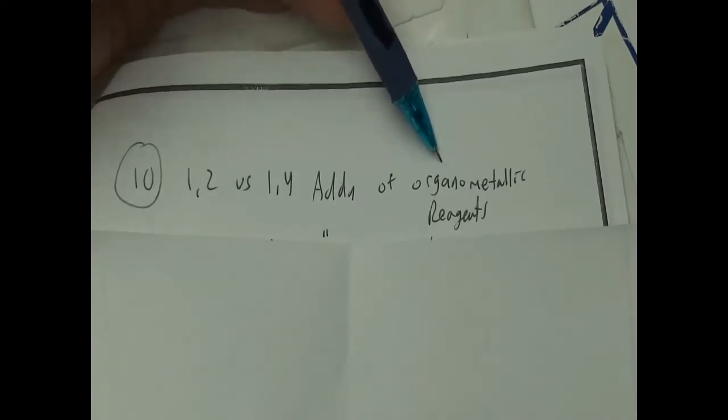We were talking about 1,2-addition versus 1,4-addition, particularly organometallic reagents — things that have a metal in them. Grignards and organolithiums are organometallic reagents. We also know that copper reagents, or cuprates, are also organometallic reagents. So we really have magnesium, lithium, and copper, as of now.